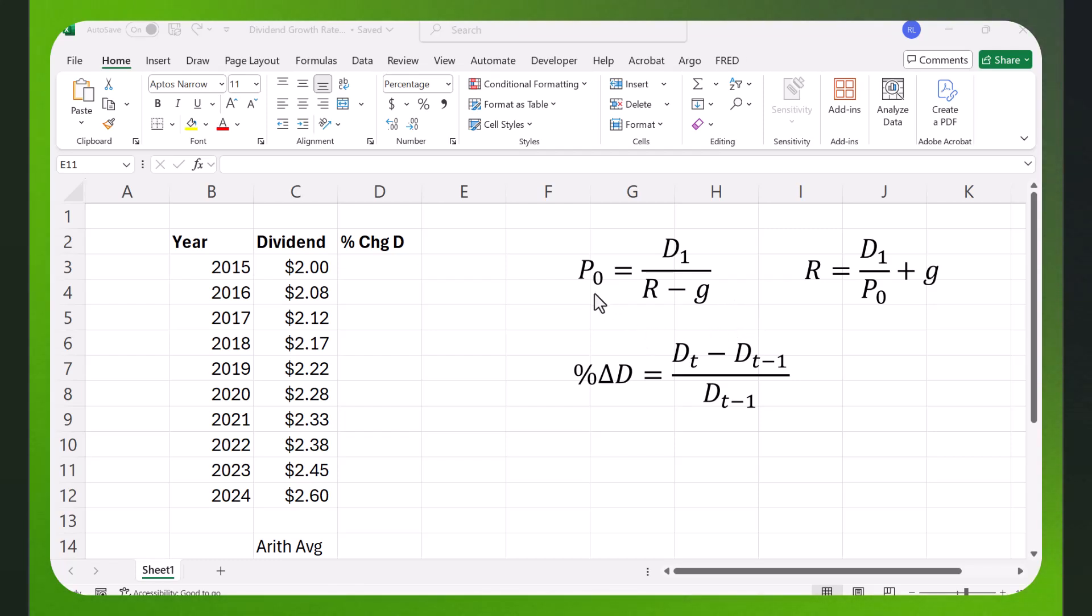Because there are a couple of formulas that actually require the use of the dividend growth rate. This is the constant growth dividend formula. It assumes that dividends grow at a constant rate of G percent and is sometimes called the Gordon growth model. It says that the dividend next period divided by R minus G, where R is the required return and G is the growth rate of dividends, gives you the price of the stock. If you do some algebra, you can turn it into a return equation so that the required return equals the dividend in year one divided by the current price, that's the dividend yield, plus G, which is the capital gains yield.